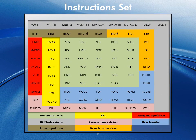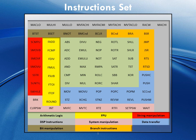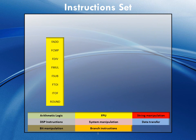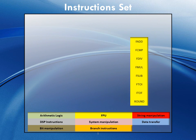This table displays the RX600 instruction set. Different colors identify different types of instructions. The yellow columns indicate the instruction set for the floating point unit. We have eight dedicated instructions. Let's see each of them in more detail.